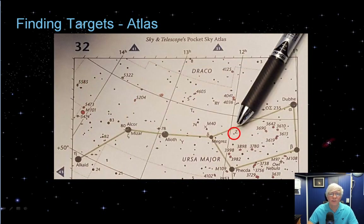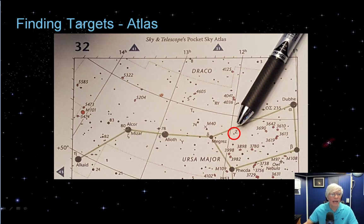Here's a close-up of Ursa Major showing the bowl of the Big Dipper. We're going to find the variable star called Z Ursa Majoris, a semi-regular long period variable encircled in red. But we need some comparison stars, or comps, to make the observation. So we're going to go to the AAVSO website's Variable Star Plotter.